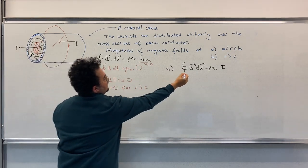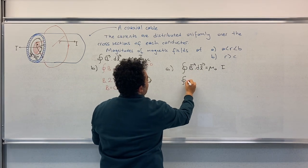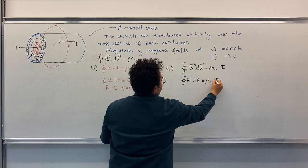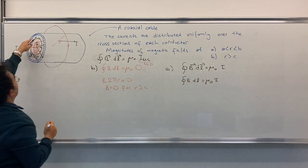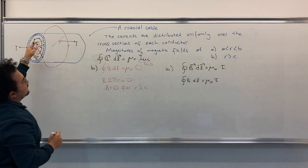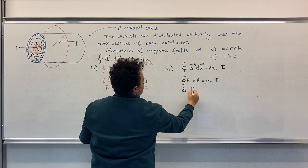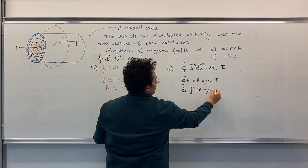So this dot product will cancel each other. And we will derive B·DL equals to μ₀I. This is constant over the circle, so it goes out. B times integral DL equals to μ₀ times I.